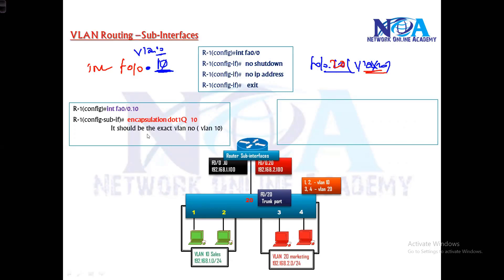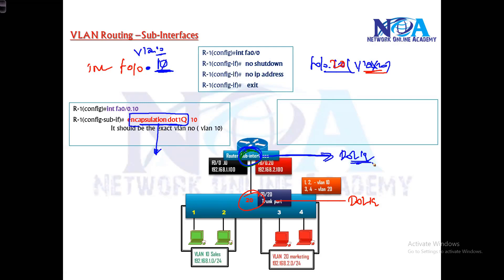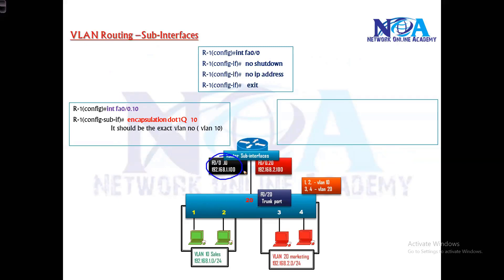The next command is encapsulation dot1q and then the VLAN ID — in this case 10. We need to specify the encapsulation, so we use dot1q encapsulation, the same encapsulation on the router side. This is how we do trunking on the router side. This sub-interface will be using dot1q encapsulation and it is going to receive all traffic for VLAN 10. We need to specify which sub-interface is the gateway for which VLAN. If a packet is coming with a tag of 10 — when the packet from VLAN 10 goes on the trunk link and onto the router side, it comes with a tag as mentioned.